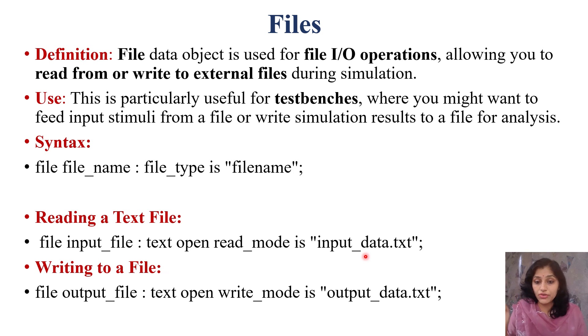While writing, again first word is file, output file, my given name is output file. The data type or the type of my file is text. Open because I'm writing write mode. My mode is write mode is output_data.txt. In this way, we can read and write data using file data object.